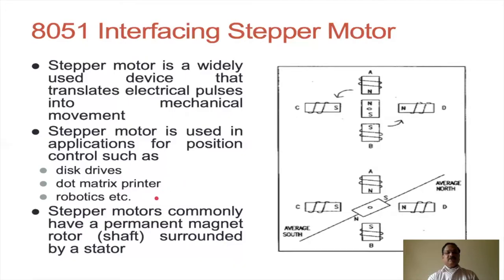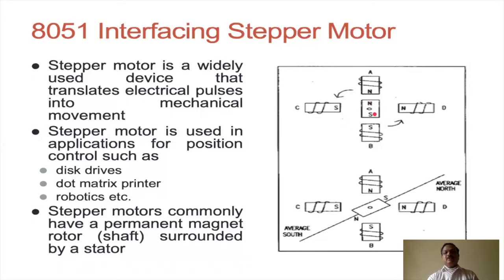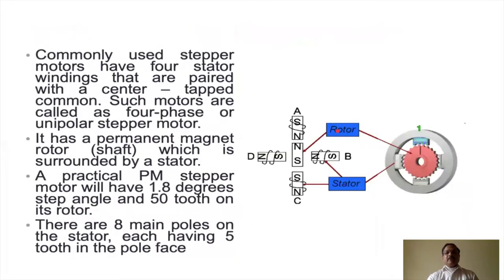The stepper motor commonly has a permanent magnet rotor surrounded by a stator. The construction is shown here — you can see the rotor and there are four stator windings: A, B, C, D. The stator windings are center-tapped, as in the four-phase or unipolar stepper motor.